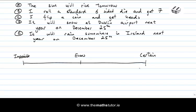Event A is certain, so we put it at the certain end. Event B — rolling a seven on a standard six-sided die — is impossible, so it goes at the impossible end. Event C — flipping a coin and getting heads — we said that was evens, so we put it in the middle. Event D — snowing at Dublin Airport next Christmas Day — is not impossible but is unlikely, so it goes somewhere between impossible and evens. Event E — raining somewhere in Ireland next Christmas Day — is not certain but is very likely, so it goes somewhere between evens and certain.